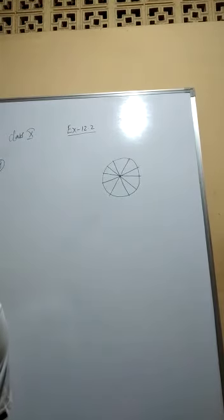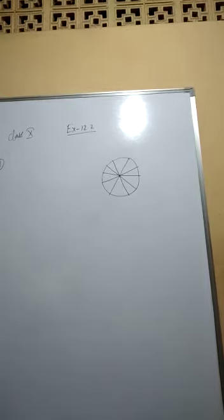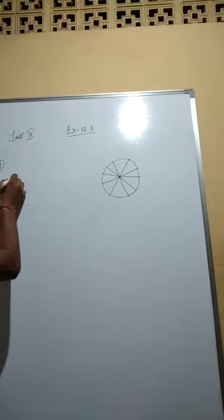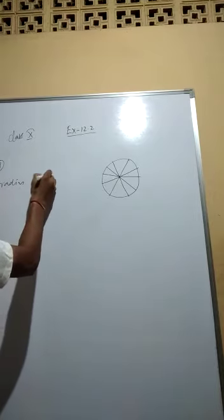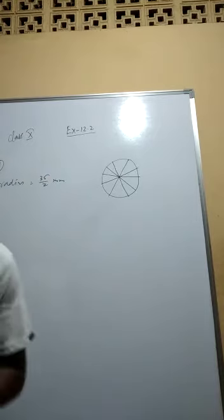So diameter is 35 mm. That means this diameter is 35 mm. So radius would be what? Radius is 35 by 2 mm. Now what we have to find out?